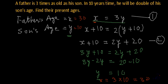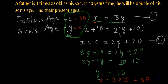So this is the solution. We have found the son's age as 10 years and father's age as 30 years. This was the method using two variables, where we formed two equations and then solved them.